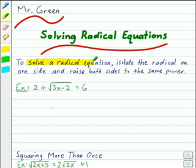To solve a radical equation, you first want to isolate the radical on one side, and then raise both sides to the same power. Let's use this process on the first example I've written down.